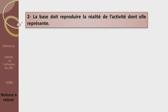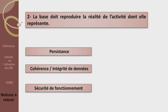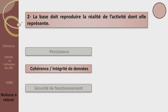Deuxième définition : la base doit reproduire la réalité de l'activité dont elle représente. S'agit-il de la persistance, de la cohérence ou bien de la sécurité du fonctionnement ? Ce n'est pas la persistance. Ce n'est pas non plus la sécurité de fonctionnement, qui veut dire assurer l'état fonctionnel de la base malgré les problèmes liés au matériel ou au logiciel. C'est la cohérence et l'intégrité des données.